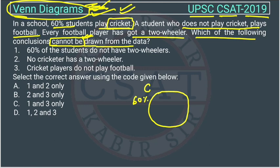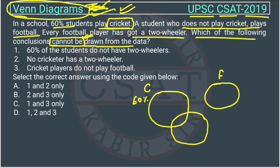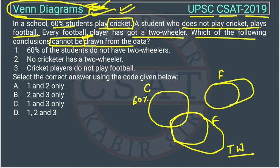We know there are students playing cricket and students playing football. The football circle could be outside the cricket circle, or it could overlap — meaning there may be students playing both football and cricket. This information is not explicitly given. Every football player has a two-wheeler, so all football players fall within the two-wheeler set. Either the first case or the second case is possible.